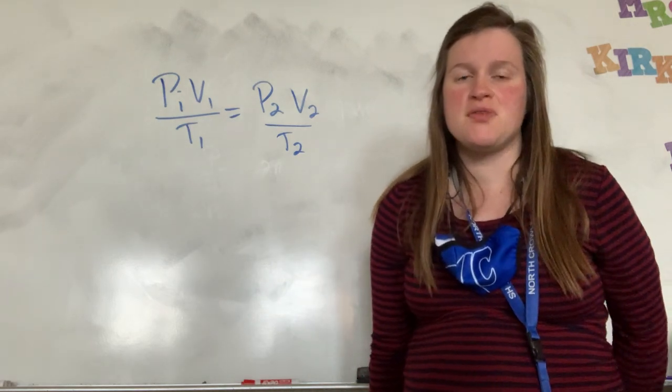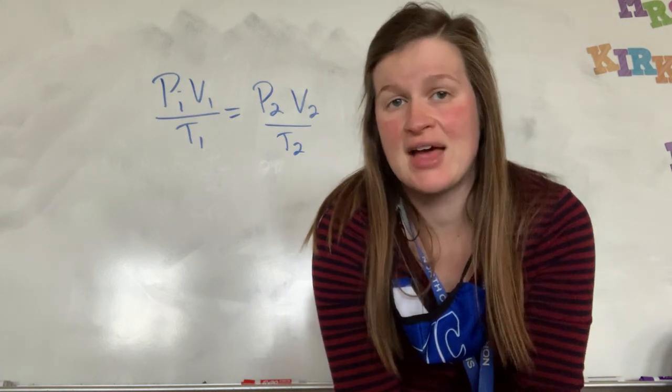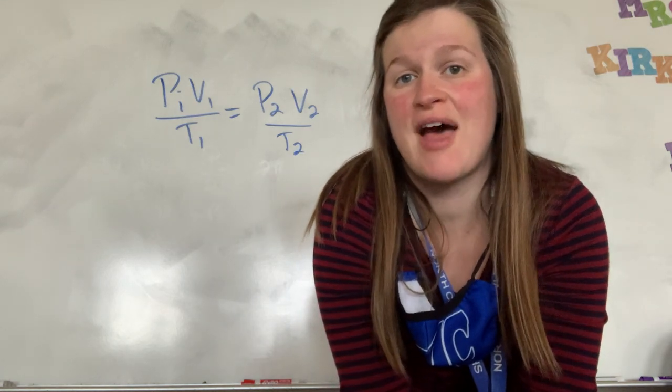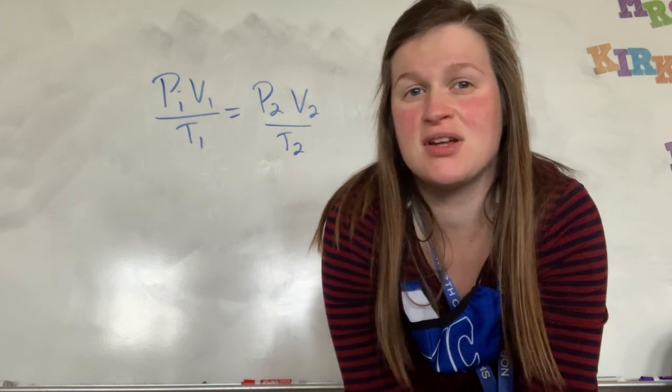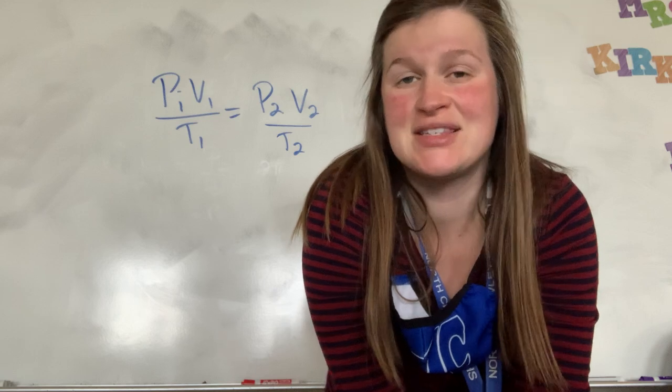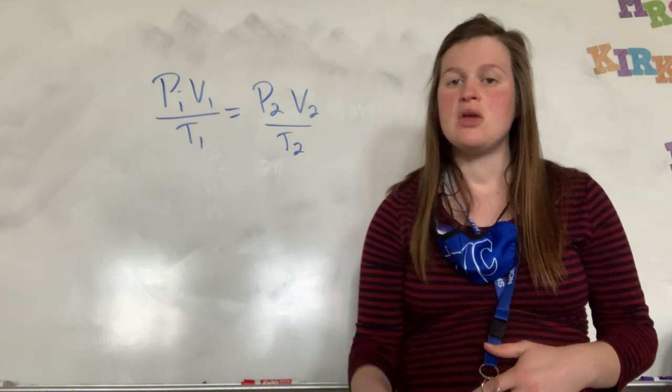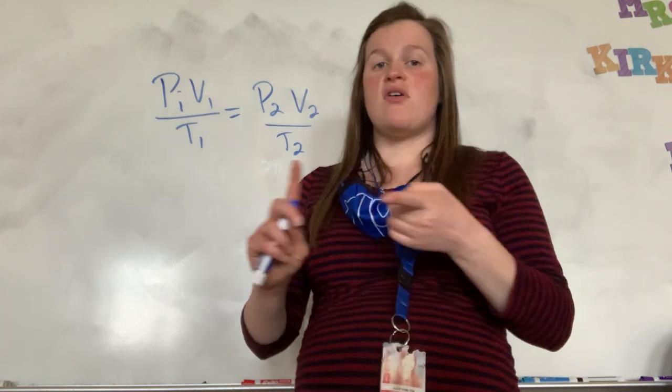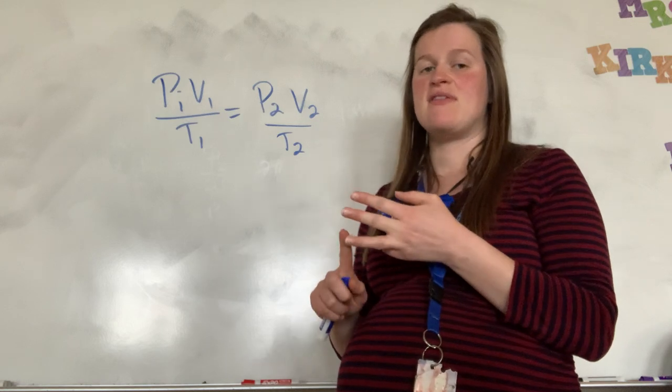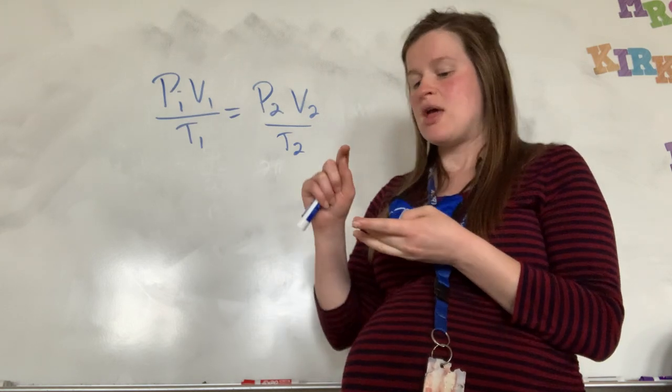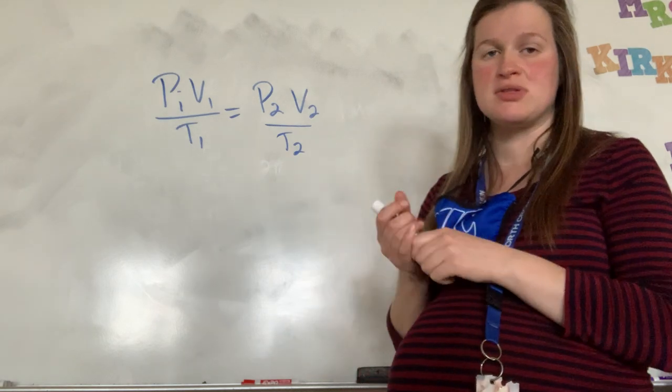And so we have example problems for this one. It says, a 10 milliliter sample gas measured at 1.45 atmospheres pressure and 60 degrees Celsius is to be corrected to the volume it would occupy at STP. What is the new volume of the gas? So they give us a volume, 10 milliliters. They give us a pressure, 1.45 atmospheres, and they give us a temperature. So that is our P1, V1, and T1.